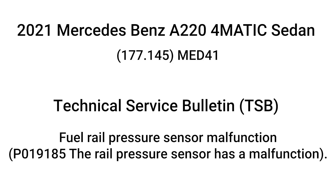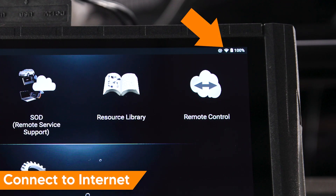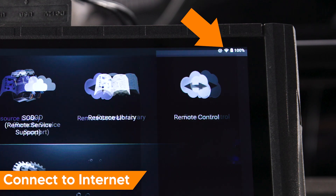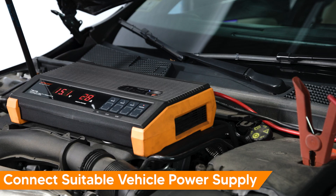Our subject vehicle has a TSB for fuel rail pressure sensor malfunction, which is remedied by performing a software update. Before beginning, be sure you have a stable internet connection. We also recommend switching to a wired connection between your NX tablet and the VCI. Connect a suitable vehicle power supply.